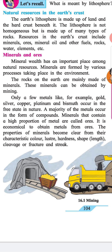Only a few metals — for example, gold, silver, copper, platinum and bismuth — occur in the free state in nature. A majority of metals occur in the form of compounds. Minerals that contain a high proportion of metals are called ores.